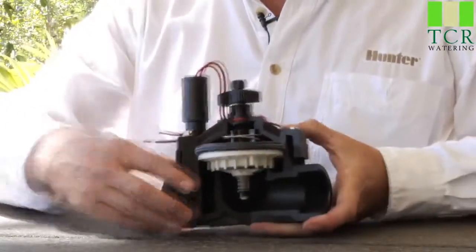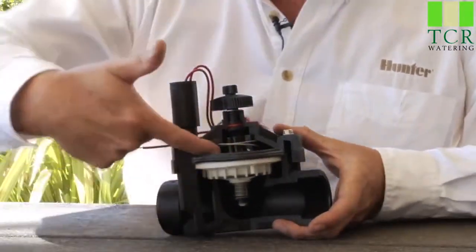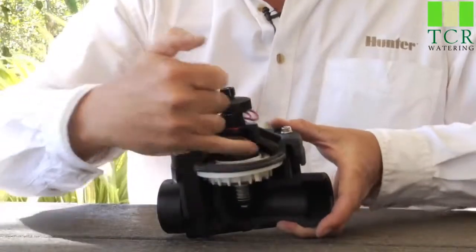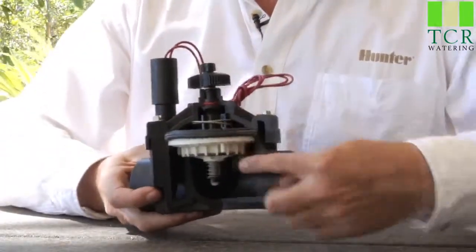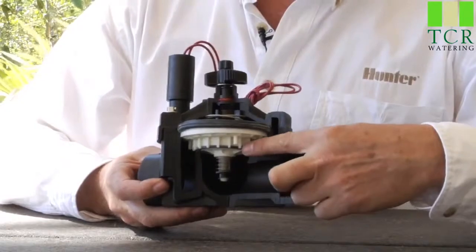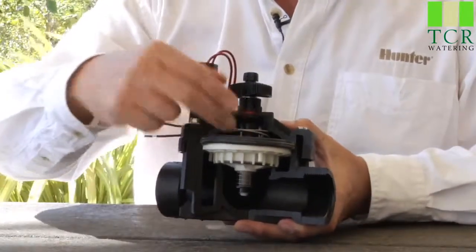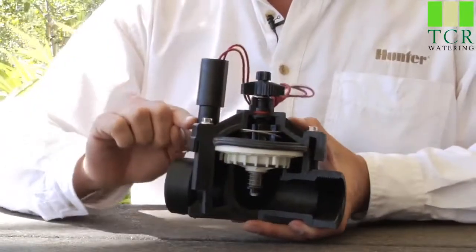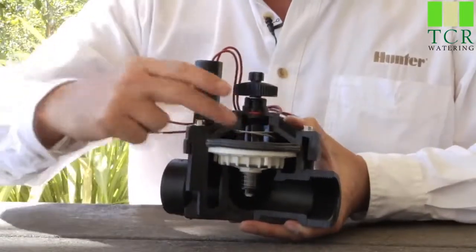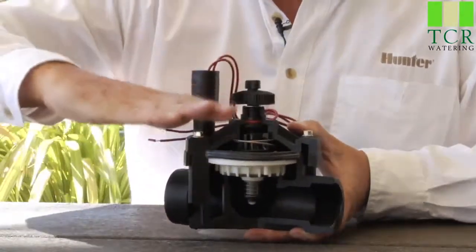The top portion of the valve has something called a bonnet chamber, and you can see that inside here. At idle, the diaphragm sits down on the diaphragm seat, and there's no escape of the water here on top, so it's pressurized. The plunger is down, it's not allowing water to escape, so that pressure sits on top of that diaphragm.